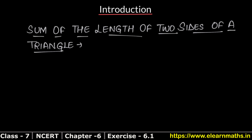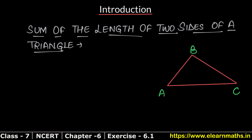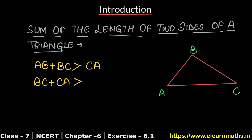Next topic is the sum of the length of two sides of a triangle. In triangle ABC, with sides AB, BC, and CA, we look at the relationship between the sum of two sides and the third side.